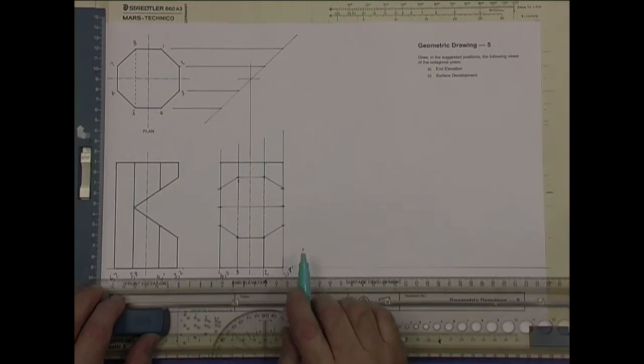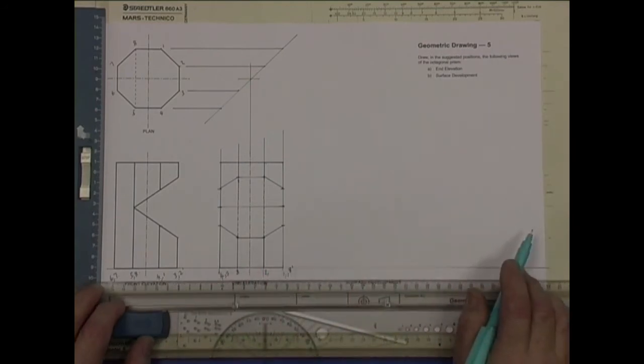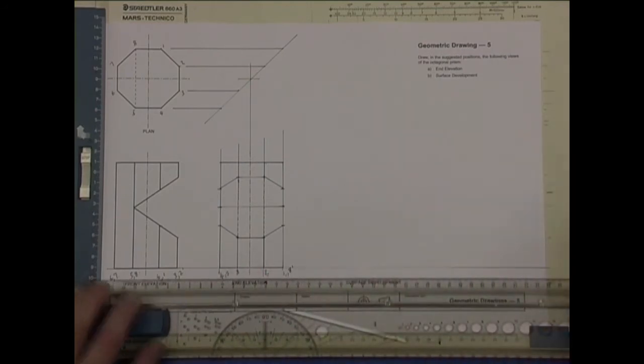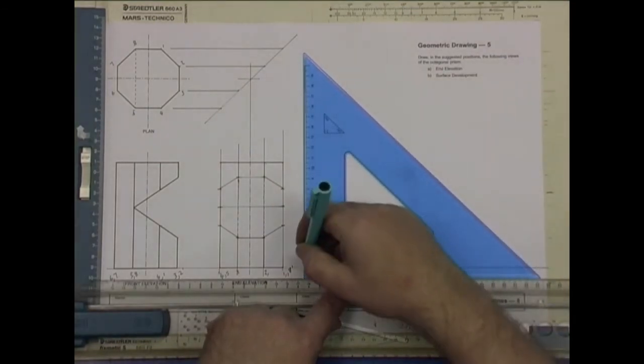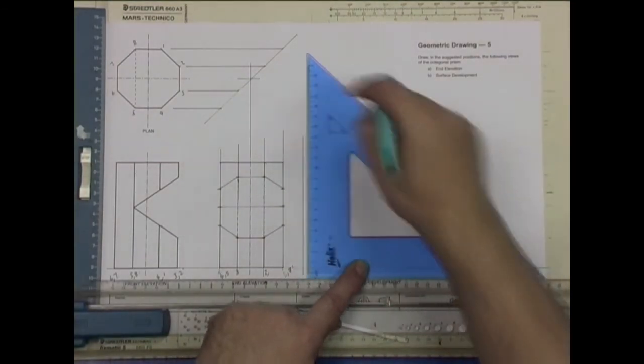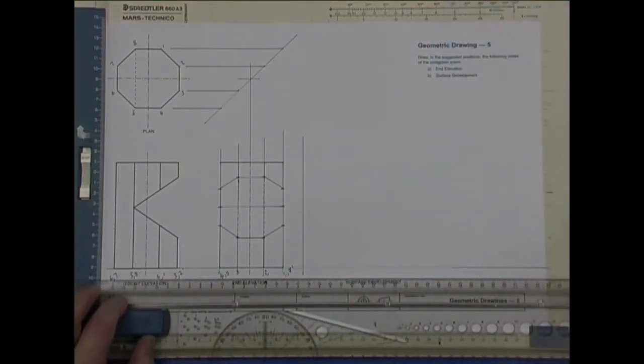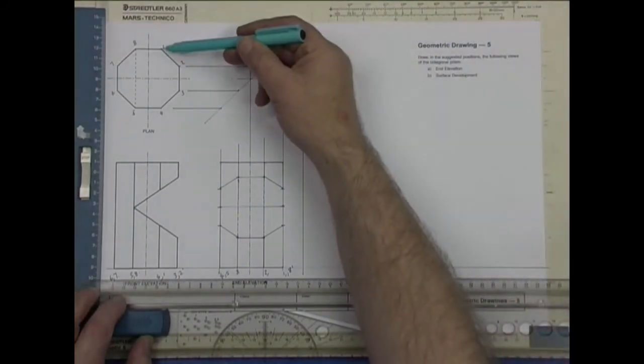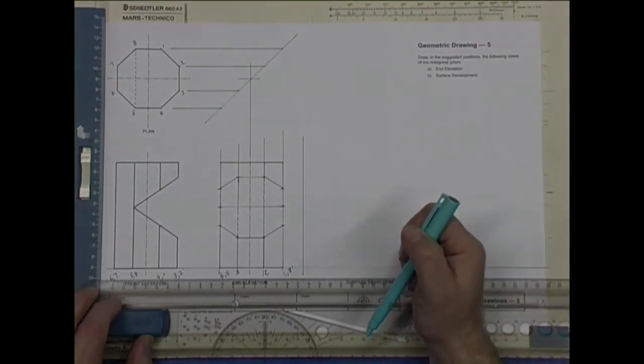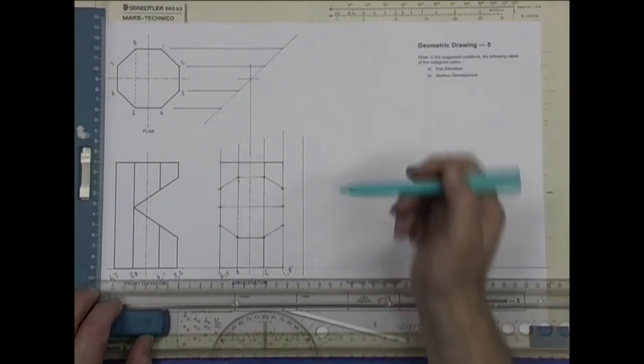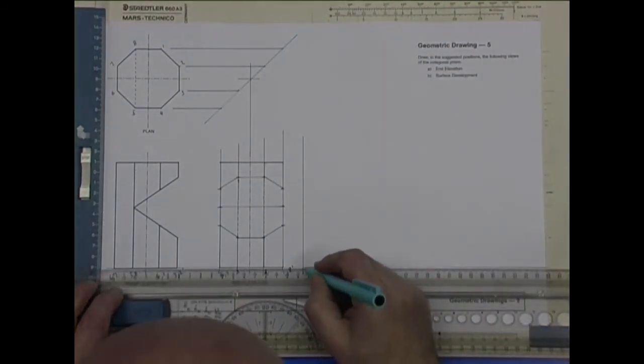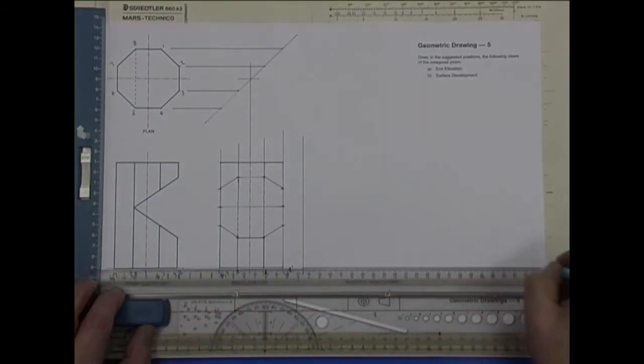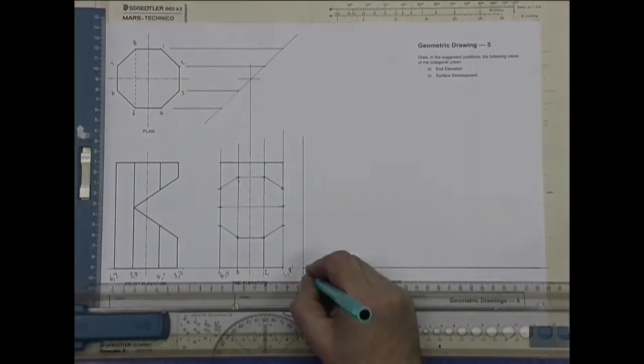Now what we have to do is we have to do a development. So I'm going to start off with just a vertical line. I'm just going to start at number one. And I'm going to measure it along.